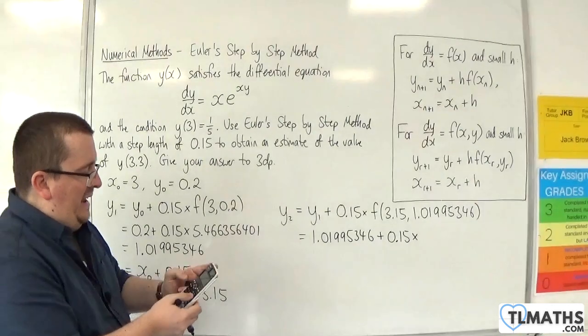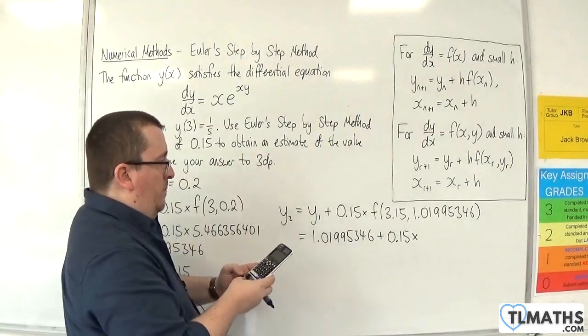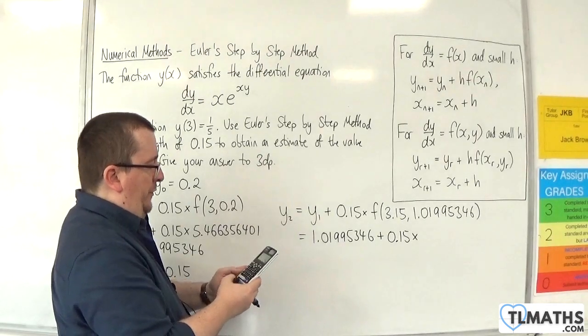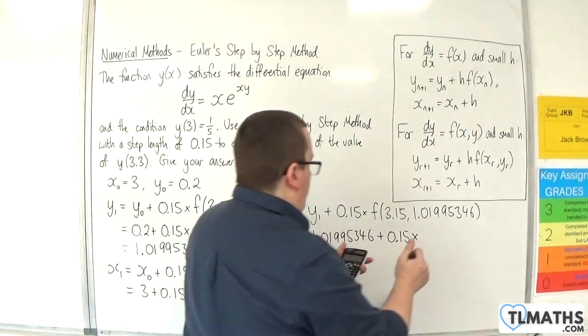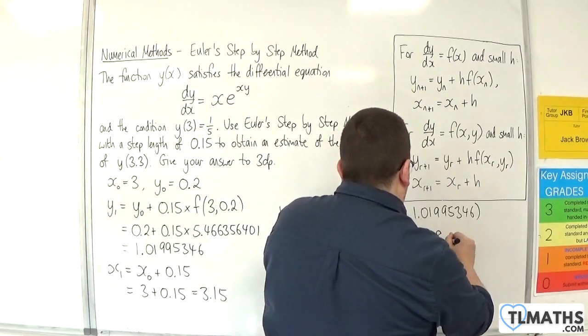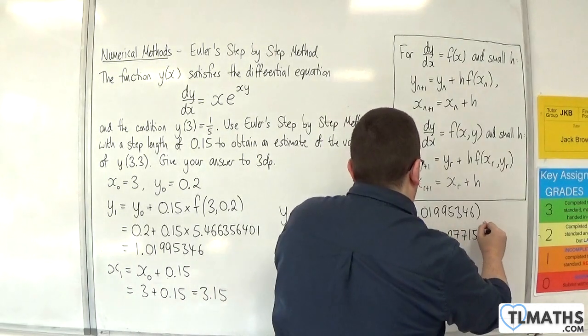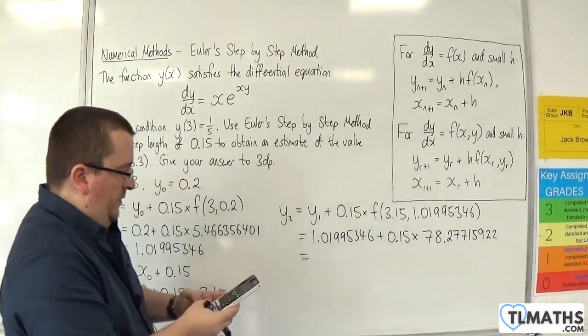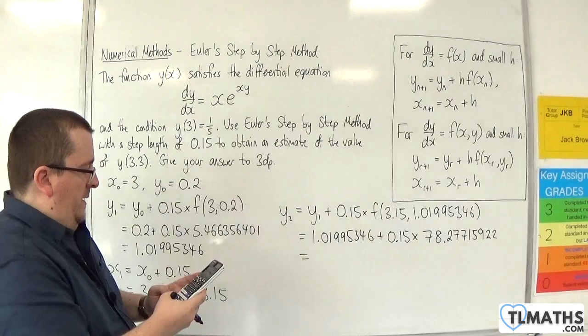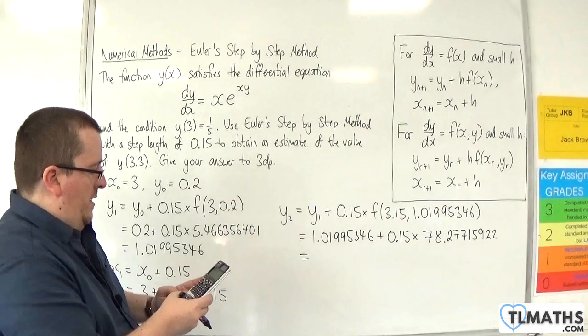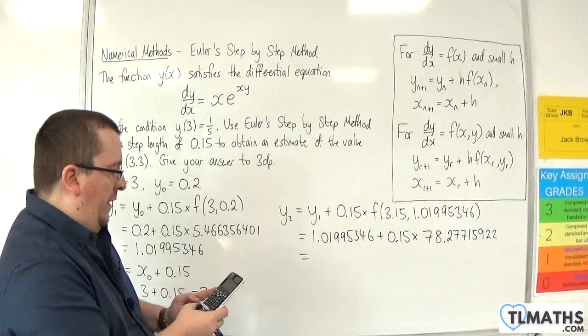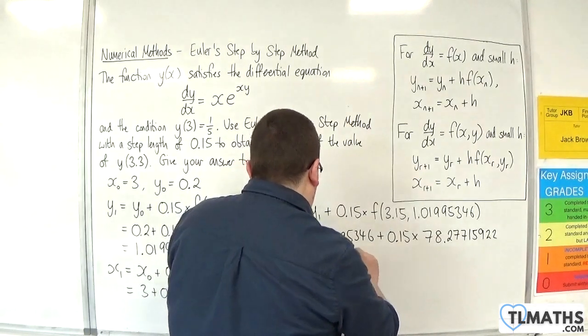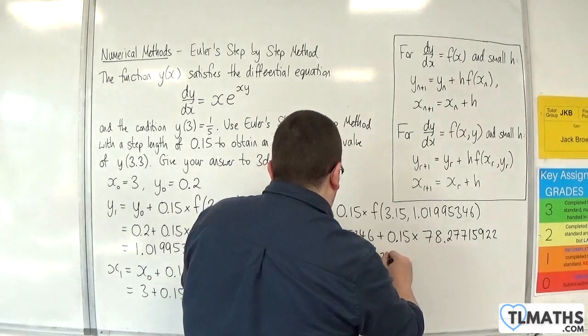And I'm getting 78.27715922. So I'm timesing that by 0.15, and adding on 1.01995346. And I get 12.76152734.